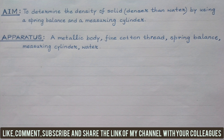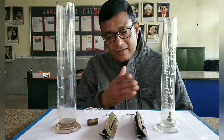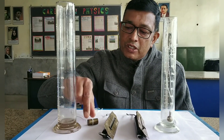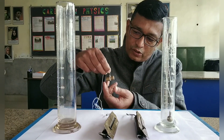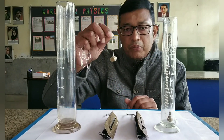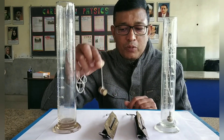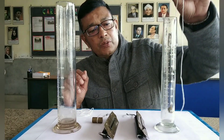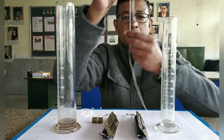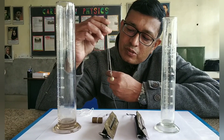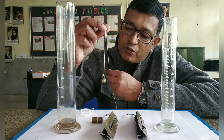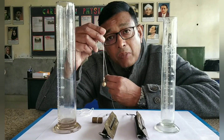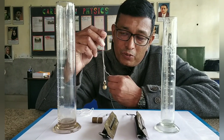This is the setup to find out the density of a given metallic body. It is a cylindrical body made up of brass. This is another body which we have considered — it is in the form of a small metallic bob and it is attached with the help of a thread. Its density can also be found.